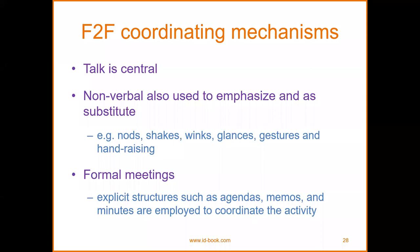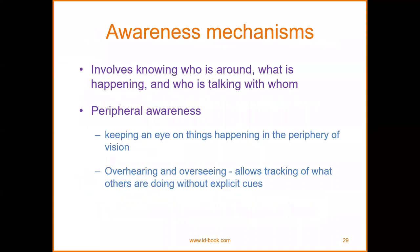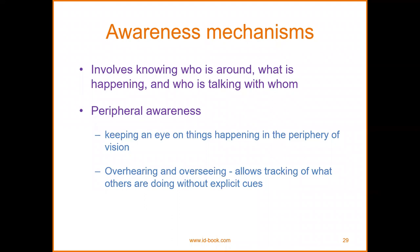Formal meetings use explicit structures such as agendas, memos, and minutes to coordinate activity. Awareness mechanisms involve knowing who is around, what is happening, and who is talking with you — peripheral awareness — keeping an eye on things happening in the periphery of vision. Overhearing and overseeing allow tracking of what others are doing without explicit cues.